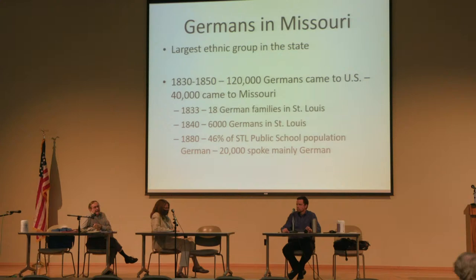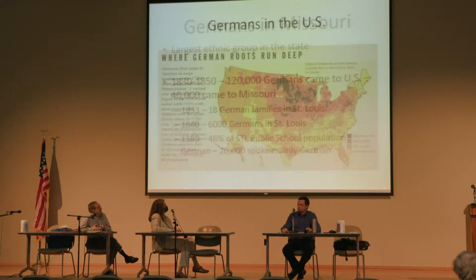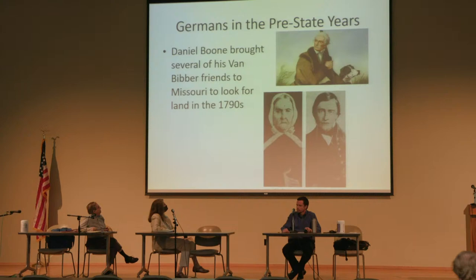In the period from 1830 to 1850, about 120,000 Germans migrated to the U.S. — 40,000 of them ended up in St. Louis. We only had 18 German families in 1833 on the city rolls, but by 1840 we had 6,000 Germans. By 1880, over 40% of the students in St. Louis public schools were German — 20,000 that spoke German only. You'll notice the dark areas indicating what's called the German Triangle, which includes Cincinnati, Milwaukee, and St. Louis — the jumping-off points from which these immigrants came.